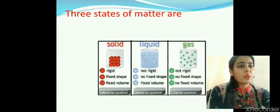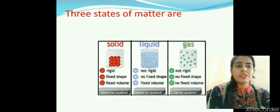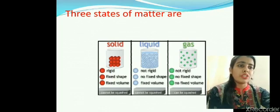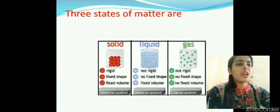There are three different states of matter: solid, liquid and gas. These differ because of the intermolecular forces of attraction between them. In solids, these forces of attraction are the strongest. That is why they have a fixed shape and a fixed volume.